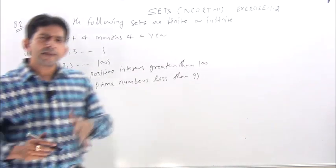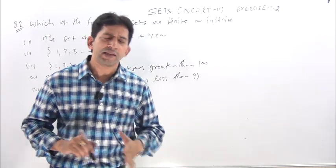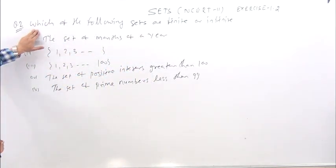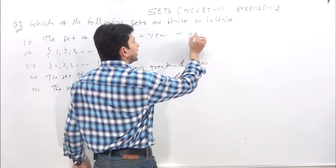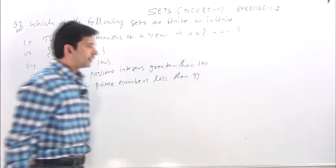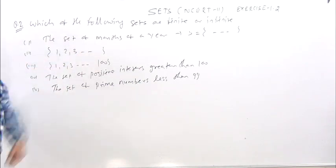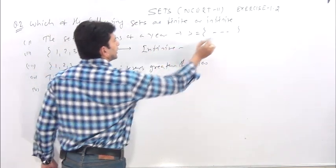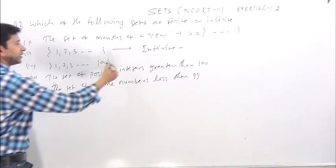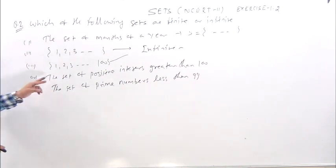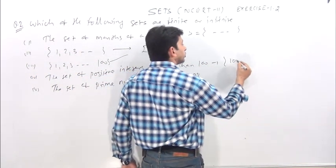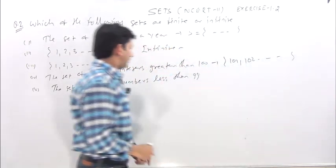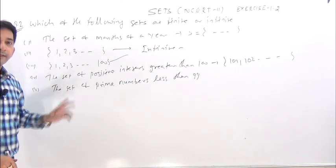Question number 2. Which of the following sets are finite or infinite? Number one: the set of months of a year. This is finite set because we know there are 12 months in a year. Second: 1, 2, 3 endless. This is infinite set. Third: 1, 2, 3 up to 100. This is also finite set. The set of positive integers greater than 100 is endless, so infinite set. The set of prime numbers less than 99 is also finite set.